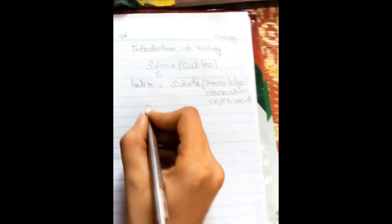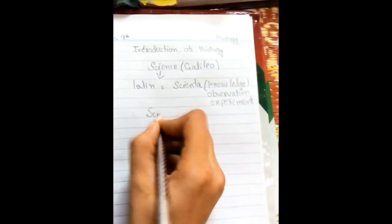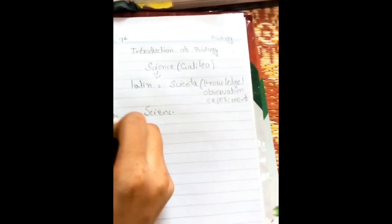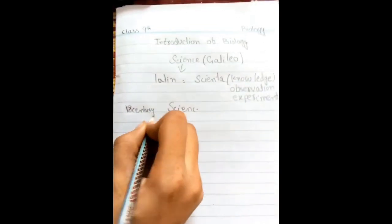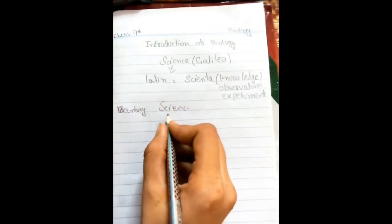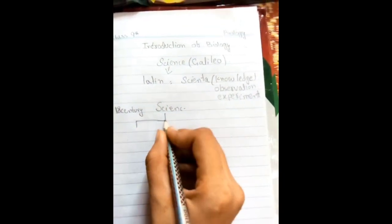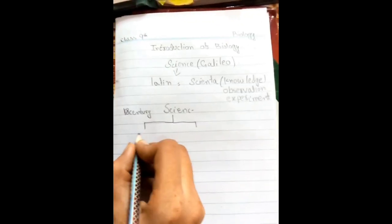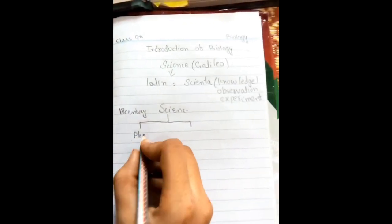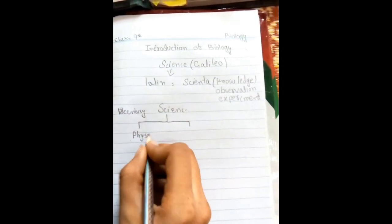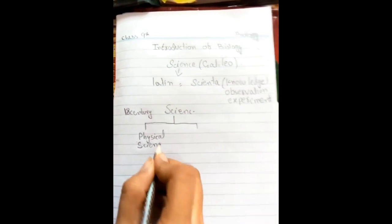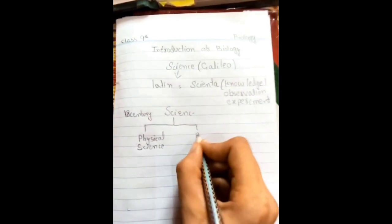In the 18th century, the word science was divided into two parts: physical science and biological science.